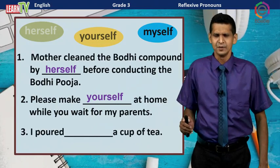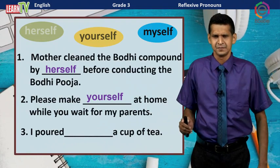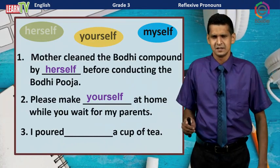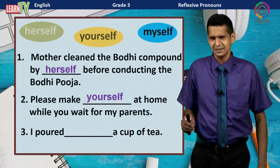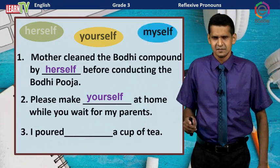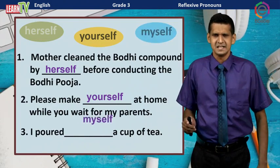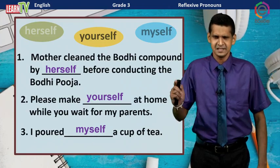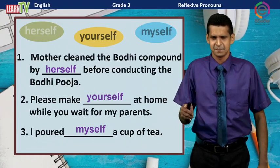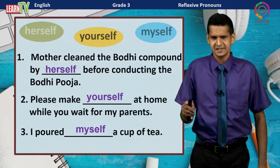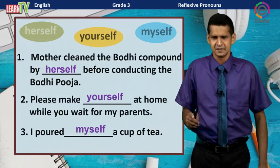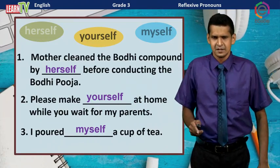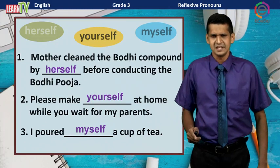Let us go to the third one. I poured ___ a cup of tea. The answer is: I poured myself a cup of tea. Here you can see the subject 'I' is the same as the object 'myself.' I poured myself a cup of tea.